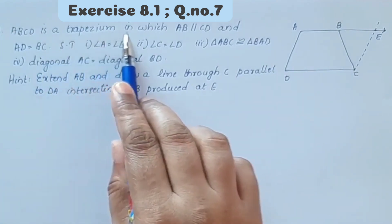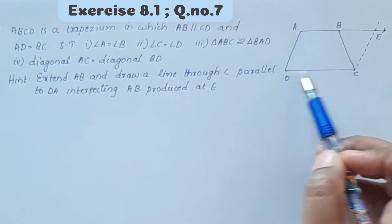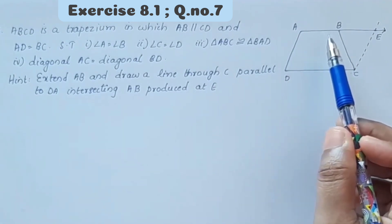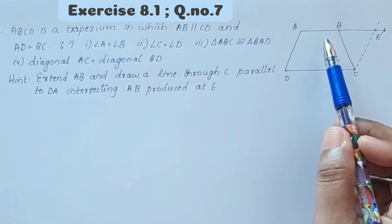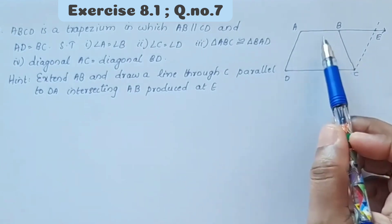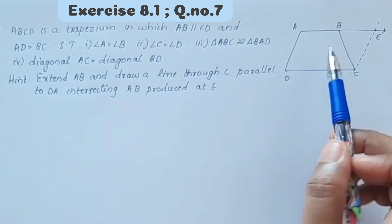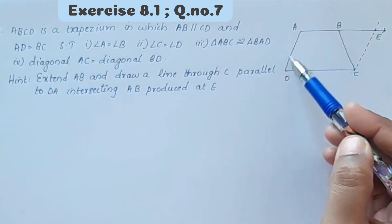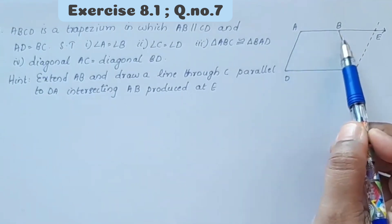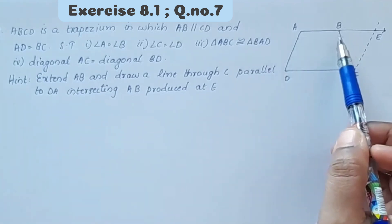ABCD is a trapezium in which AB is parallel to CD. The opposite sides are parallel. We are given that AB and CD are parallel sides. We need to prove that angle A and angle B are equal.